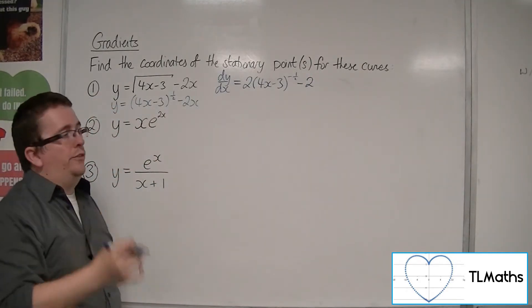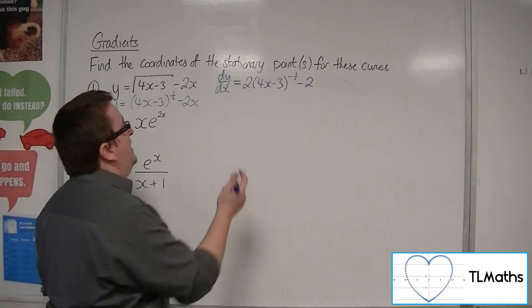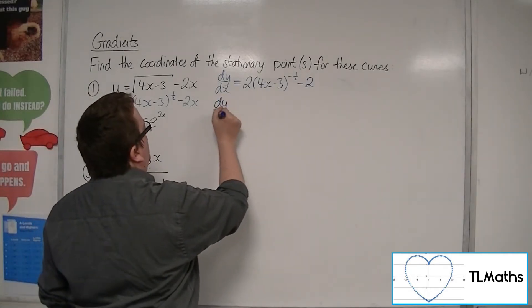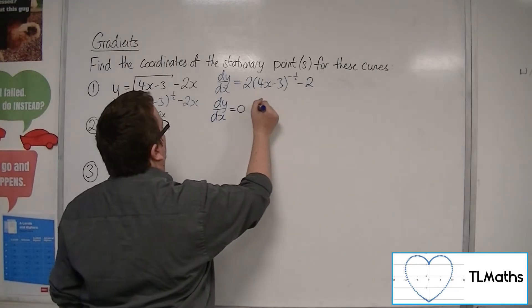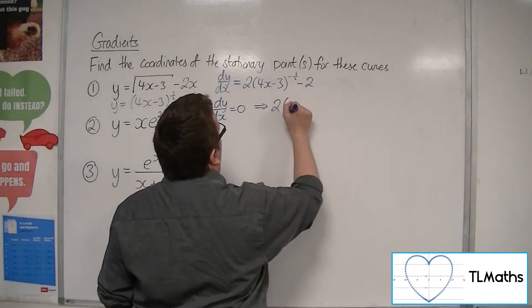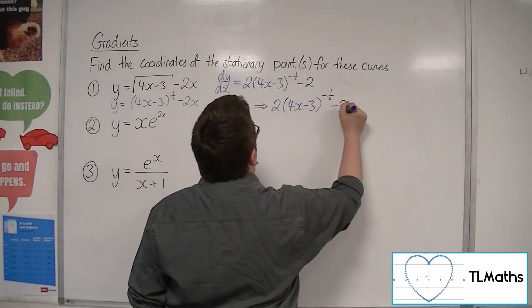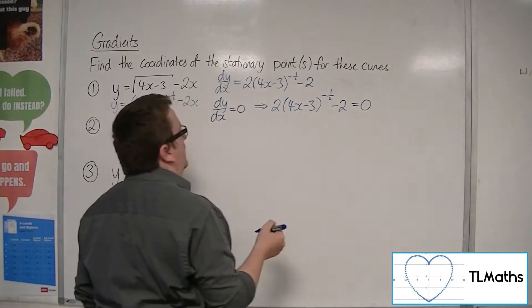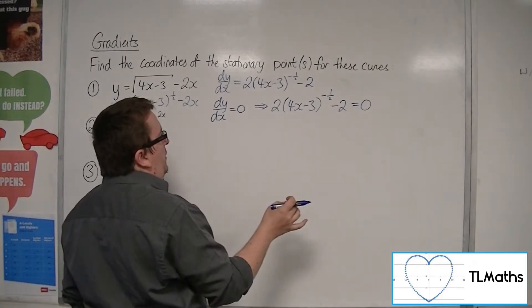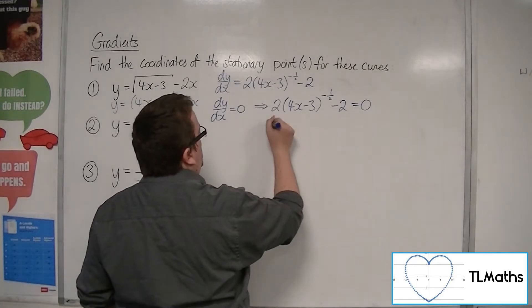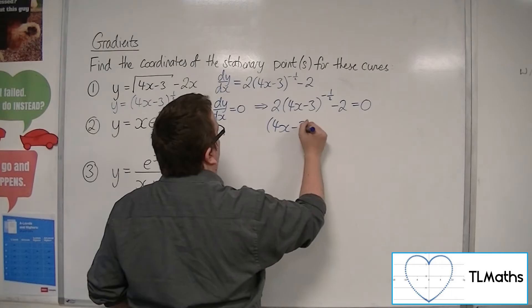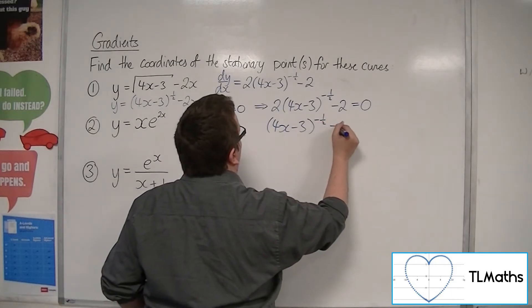So I want to put dy/dx equals 0 in order to find the stationary points. So 2(4x - 3)^(-1/2) - 2 = 0. So if I add the 2 to both sides, divide both sides by 2, I get (4x - 3)^(-1/2) = 1.